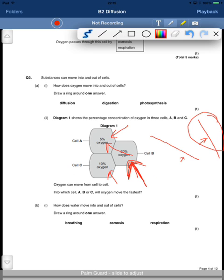So into which cell A, B, or C will oxygen move the fastest? Oxygen will move fastest into cell A because it's got the lowest concentration of oxygen. How does water move into another cells?